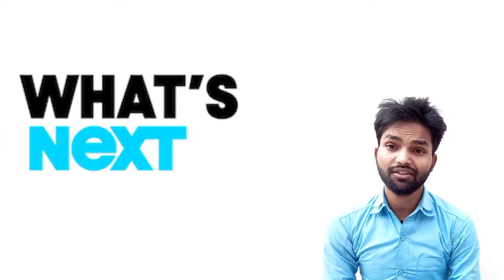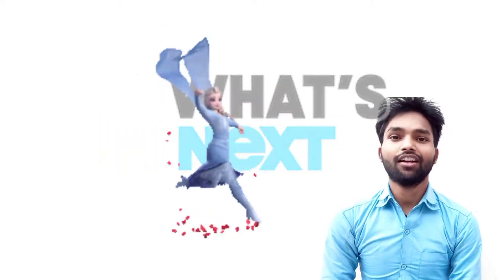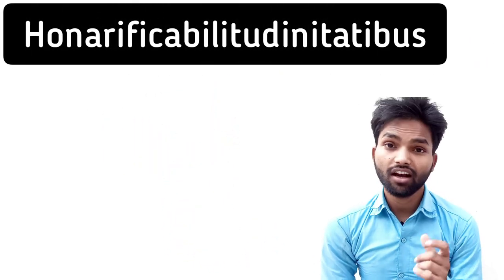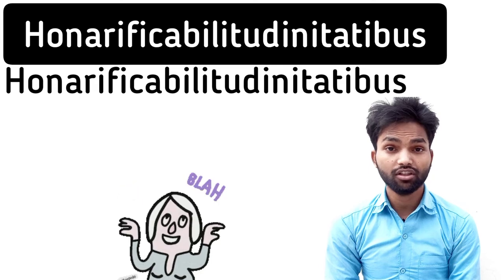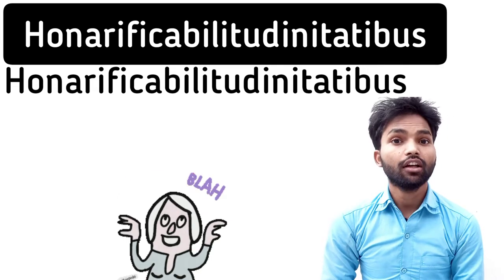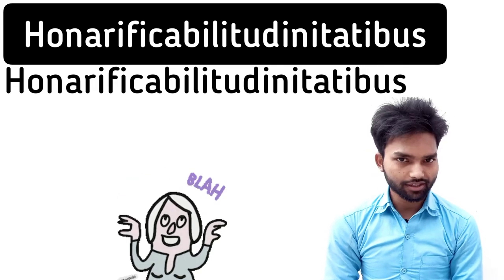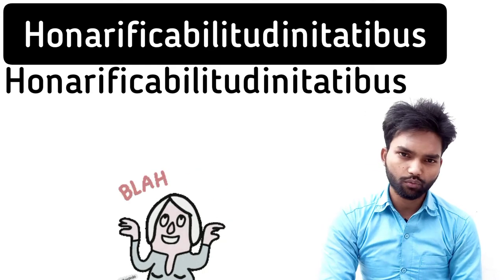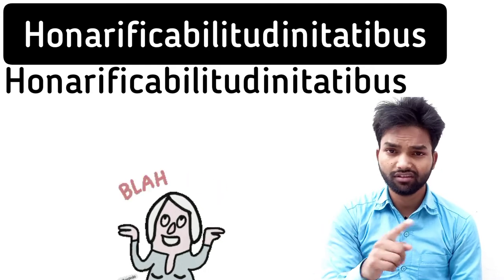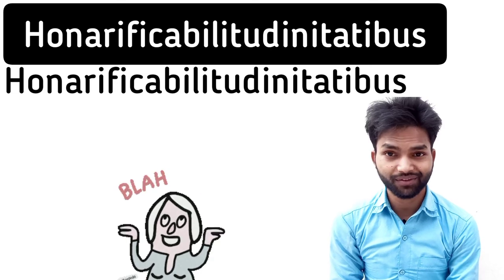Now, the next one I have taken for you is a very, very tremendous word to understand. It's very nice for you to know, and that's called Uncopyrightable Tudinativatish. This is the longest word of the English language in which there is consonant, vowel, consonant, vowel — after each consonant there is a vowel.